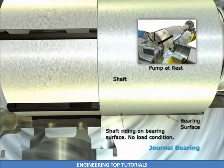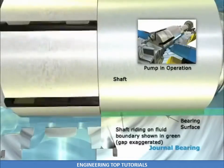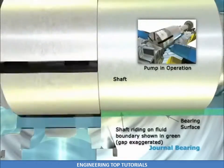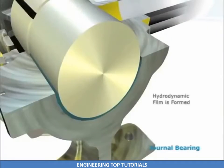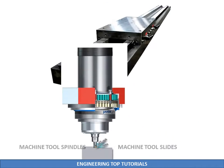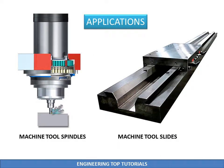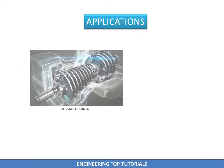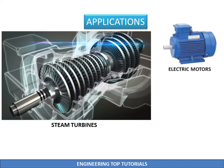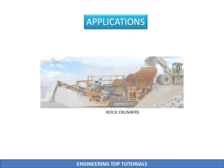This video shows the working of the hydrodynamically lubricated bearing. Typical applications for hydrodynamic bearings are machine tool spindles and slides, used for applications that require precise movement and high stiffness. These bearings can also be found in industrial applications including steam turbines, electric motors, cooling pumps, and rock crushers.